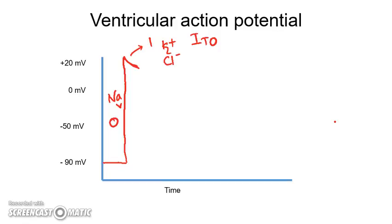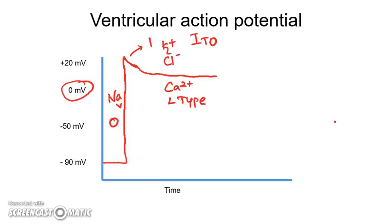After Phase 1 early repolarization, there is a plateau phase (Phase 2), which is characterized by L-type calcium channels opening and causing calcium entry inside the cell. The calcium entry inside the cell is balanced by potassium going out of the cell, so the membrane potential does not fluctuate much — it stays around 0 millivolts.